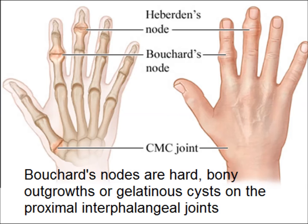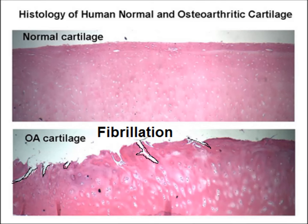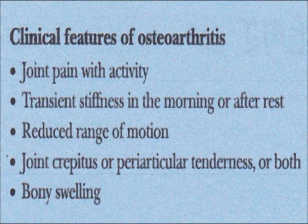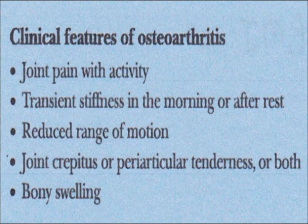These are the microscopic features of normal cartilage, and in osteoarthritis there is fibrillation or cracks. The patient presents with joint pain during activity, transient stiffness in the morning or after rest, reduced range of motion, joint crepitus or periarticular tenderness, and bony swelling.